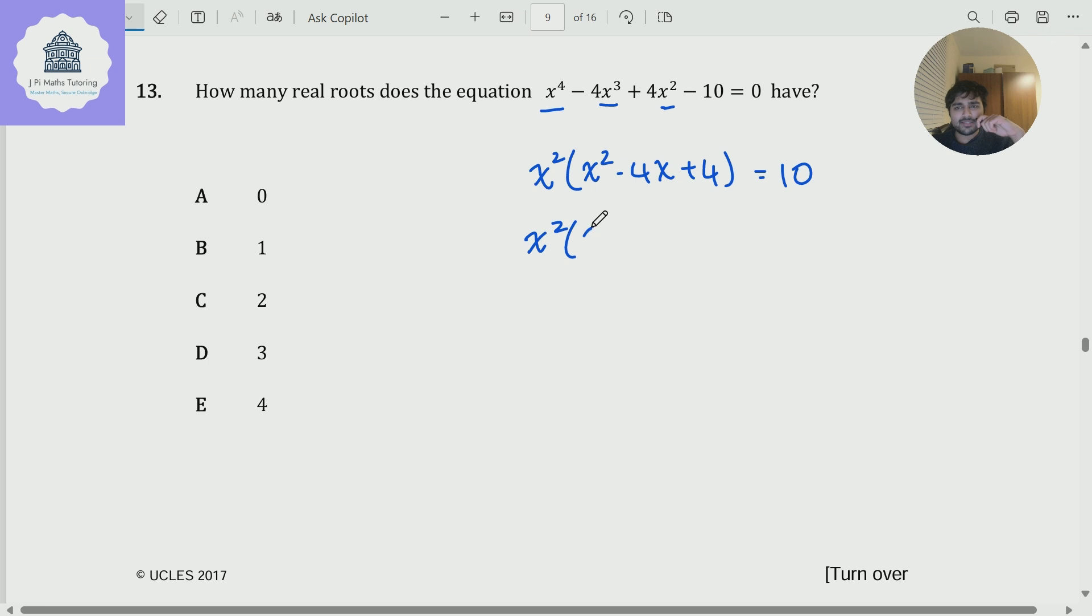Now what is this? This is just x squared times x minus 2 squared equals 10. This is quite nice. I can actually sketch this. So if I ignore the 10 for the time being, if I just call this thing here f of x, if I sketch the graph of y equals f of x, this is going to be a quartic. So it's going to make like a w shape, but it's going to have roots at 0 and 2. So it's going to have a repeated root at 0, and then a repeated root here at 2. So this is my function y equals f of x.